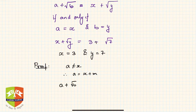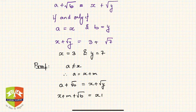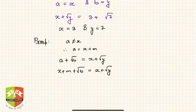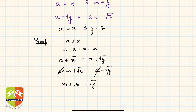So a plus root b equals x plus root y. Substituting a equals x plus m, and cancelling x from both sides, we get m plus root b equals root y. This is impossible because on the left-hand side we have a combination of rational plus irrational, and on the right-hand side we have an irrational only.